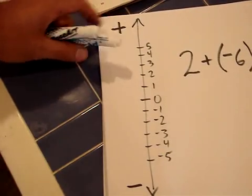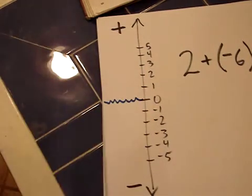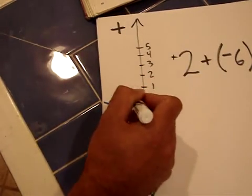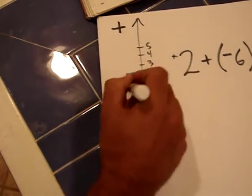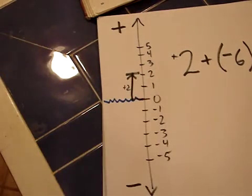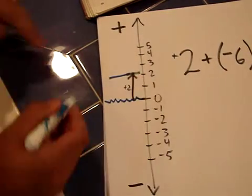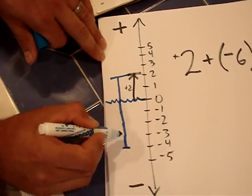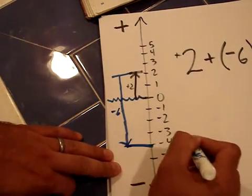On the vertical number line, think of 0 as sea level, with up being above water and down being underwater. Starting at 0, I go up 2 — that's my plus 2. Then I add a move of down 6, which is negative 6. Moving down 1, 2, 3, 4, 5, 6 — I drop down 6 and end up at negative 4.